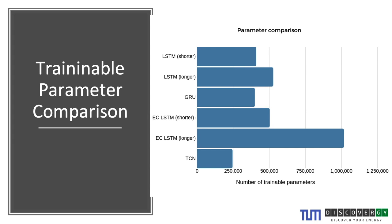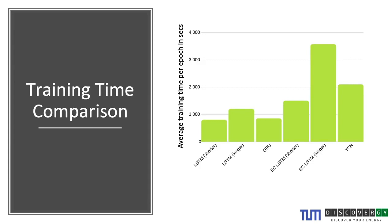I trained two LSTM models, one GRU, two encoder-decoder LSTMs, and one TCN. The GRU model has the same number of top layers as the larger LSTM, but because GRU has fewer internal parameters its total parameter count is comparable to the shorter LSTM — which is interesting. With TCN, applying filters and kernels significantly reduces the number of parameters to be trained.